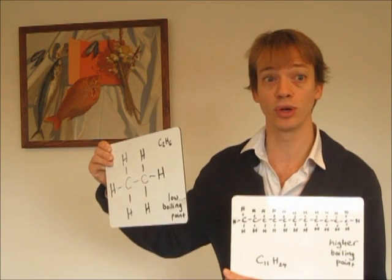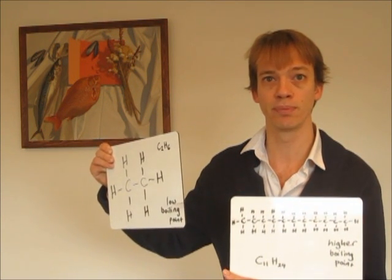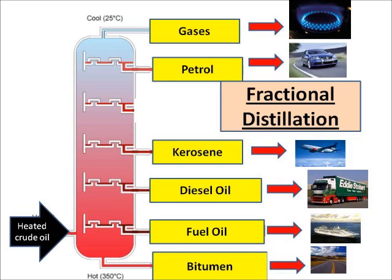That's how fractional distillation works. When we heat crude oil, it's separated into six different groups which we call fractions. Those fractions are gases, petrol, kerosene, diesel, fuel oil, and bitumen.